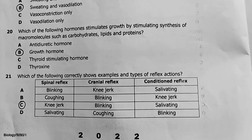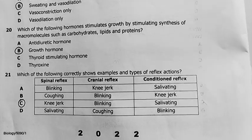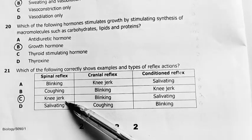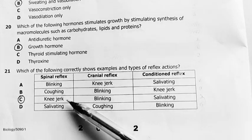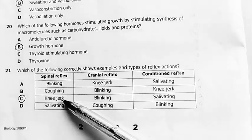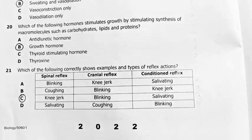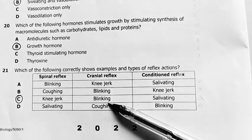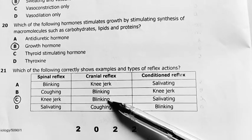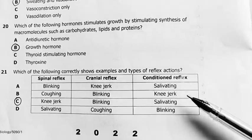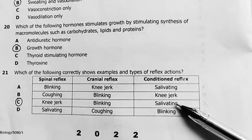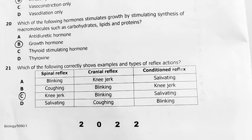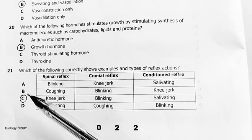Question 21 reads: which of the following correctly shows examples and types of reflex actions? A reflex action example I picked up was the knee jerk — yes, that's a spinal reflex. Cranial reflexes are those that happen within the neck and head region, so blinking is one of them, sneezing is one of them, swallowing is partly one of them. Then conditioned reflexes — an example is salivating; you salivate in response to a particular type of smell. So C is our answer.